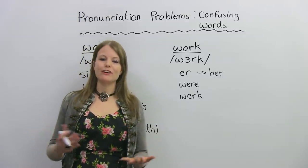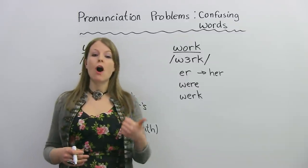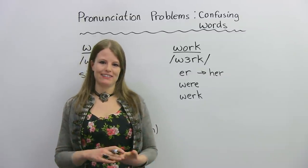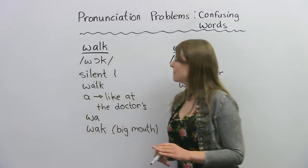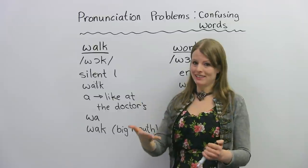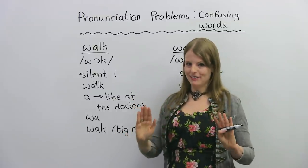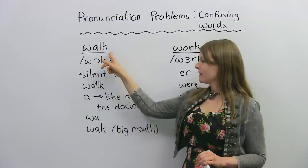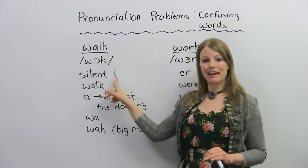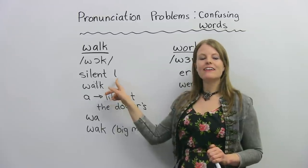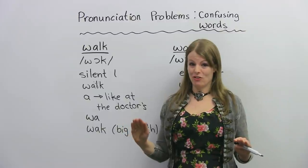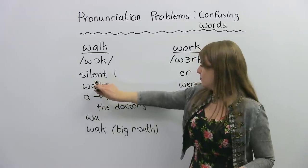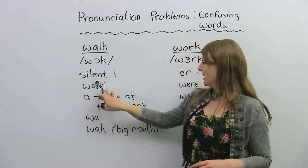The next words that are very commonly confused in their pronunciation are walk and work. Many students pronounce these as the same, but they're quite different. Let's look at walk first. One of the main mistakes people make with the word walk is with the L — some students try to pronounce the L and say 'walk' with an L sound, but the L is silent. We do not say the L at all. So it looks more like W-A-K: walk.